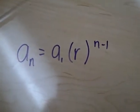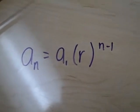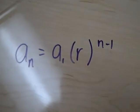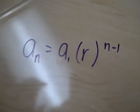I'm Danny and we have problem number 6. The explicit formula is a sub n equals a sub 1 times r to the power of n minus 1.